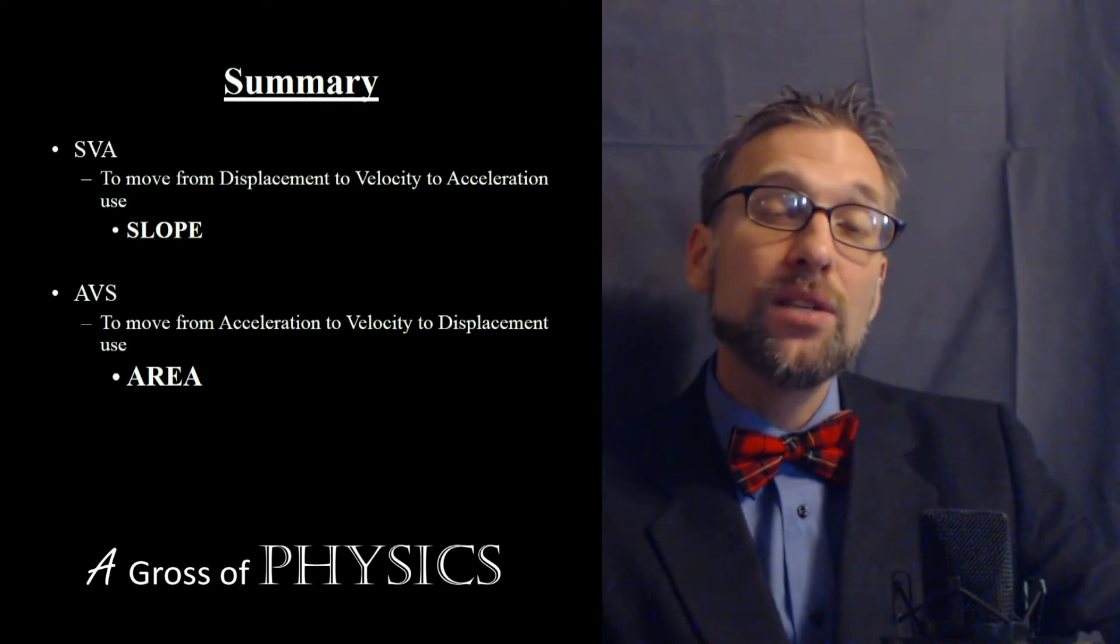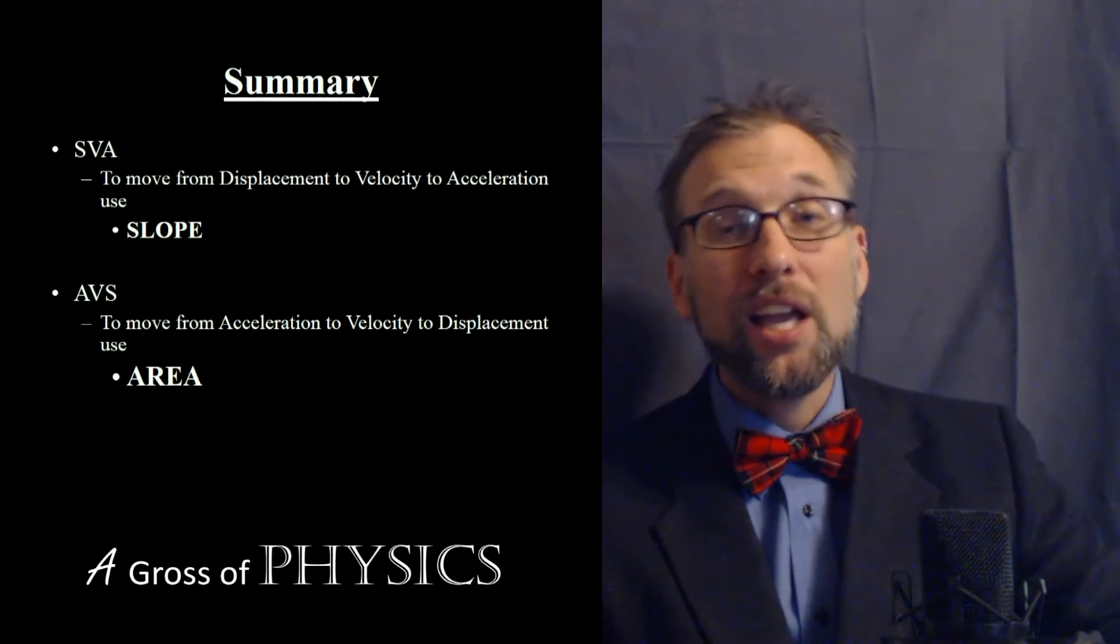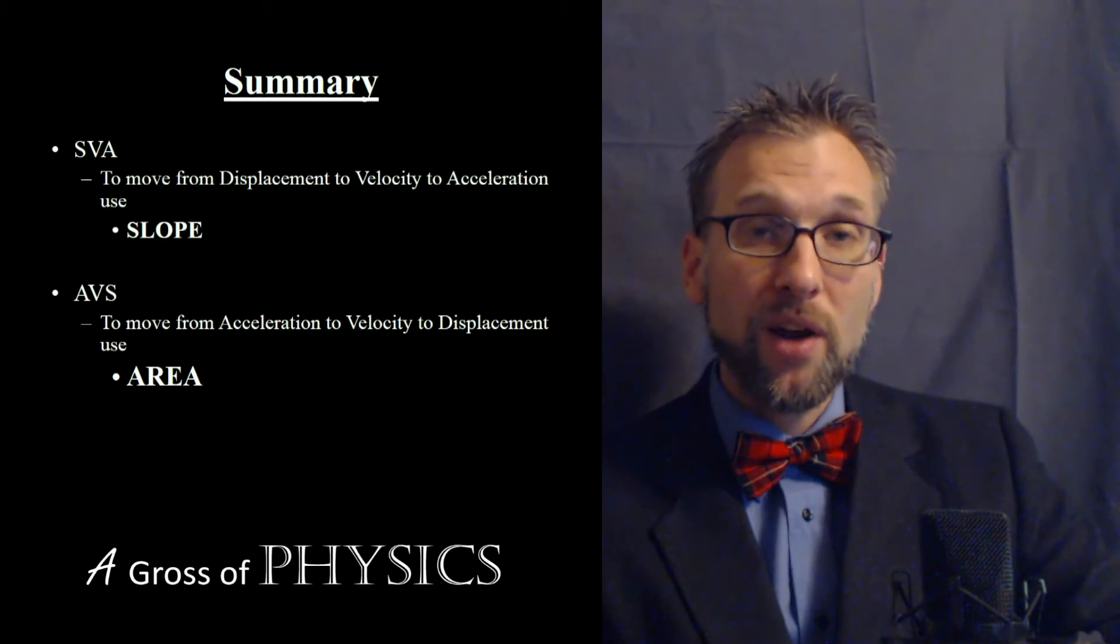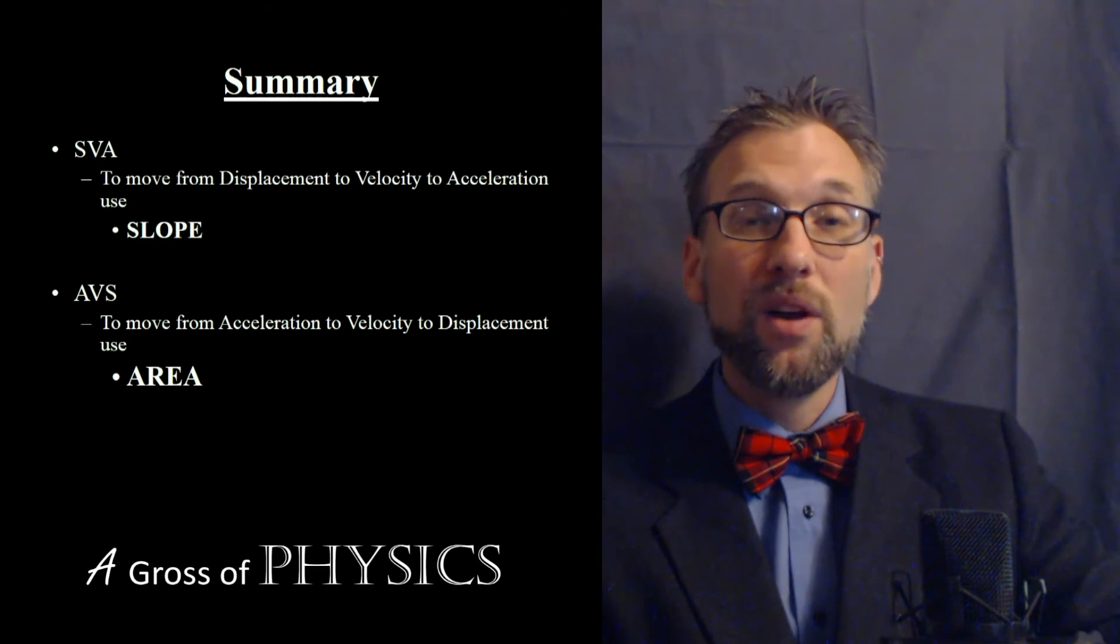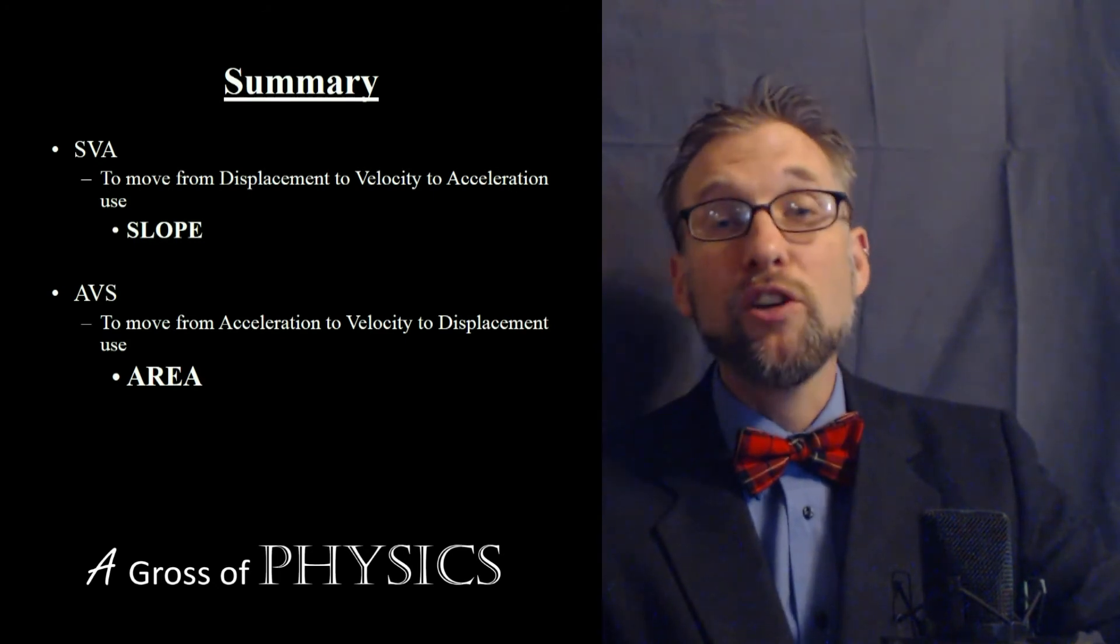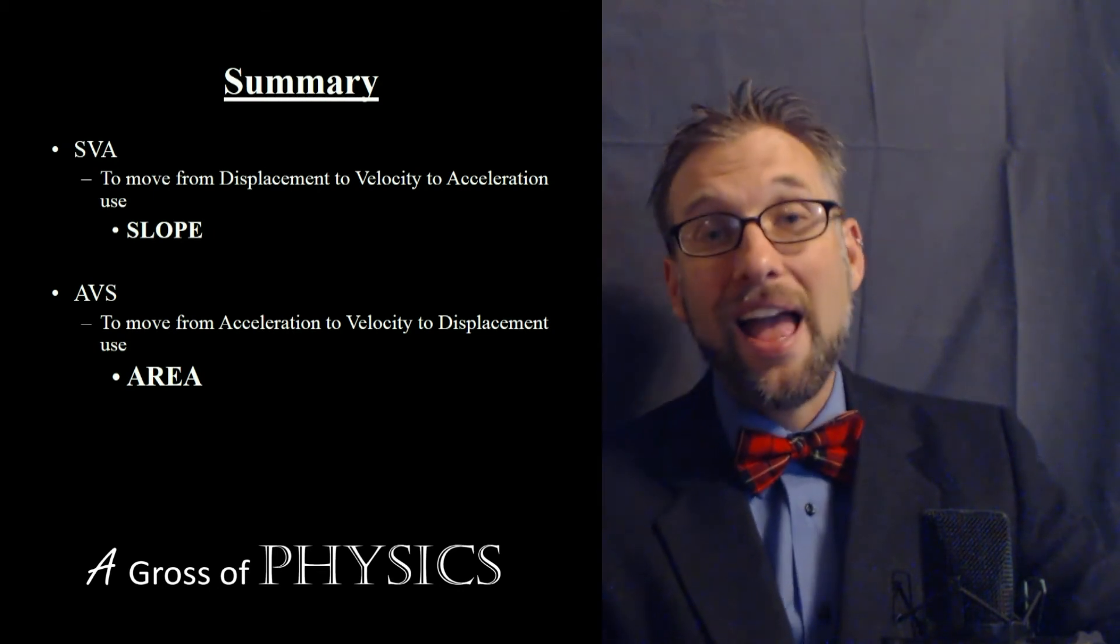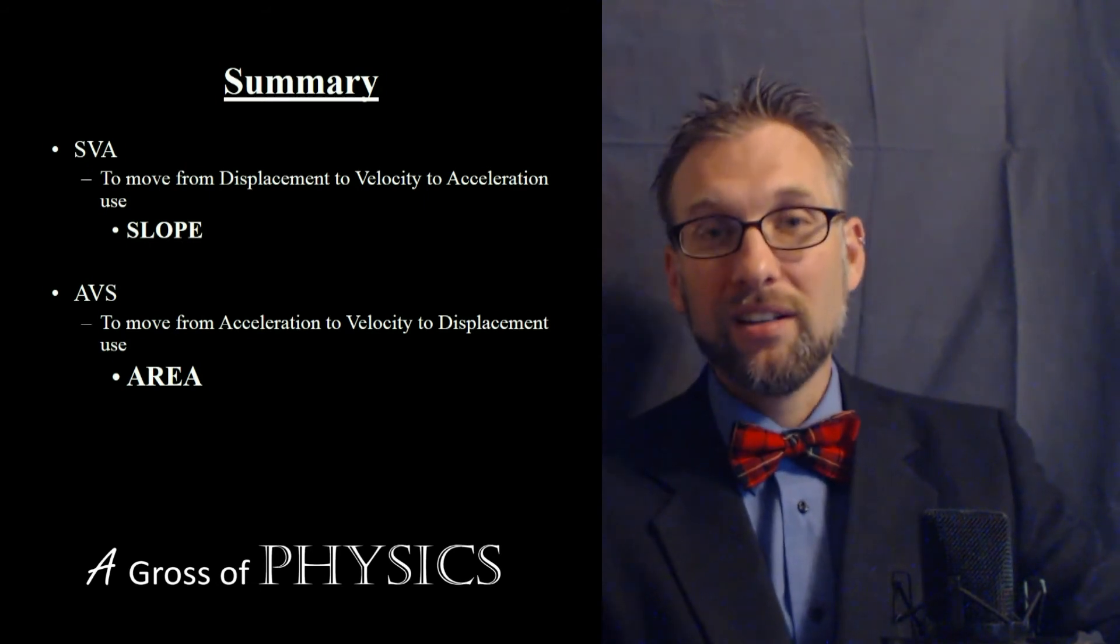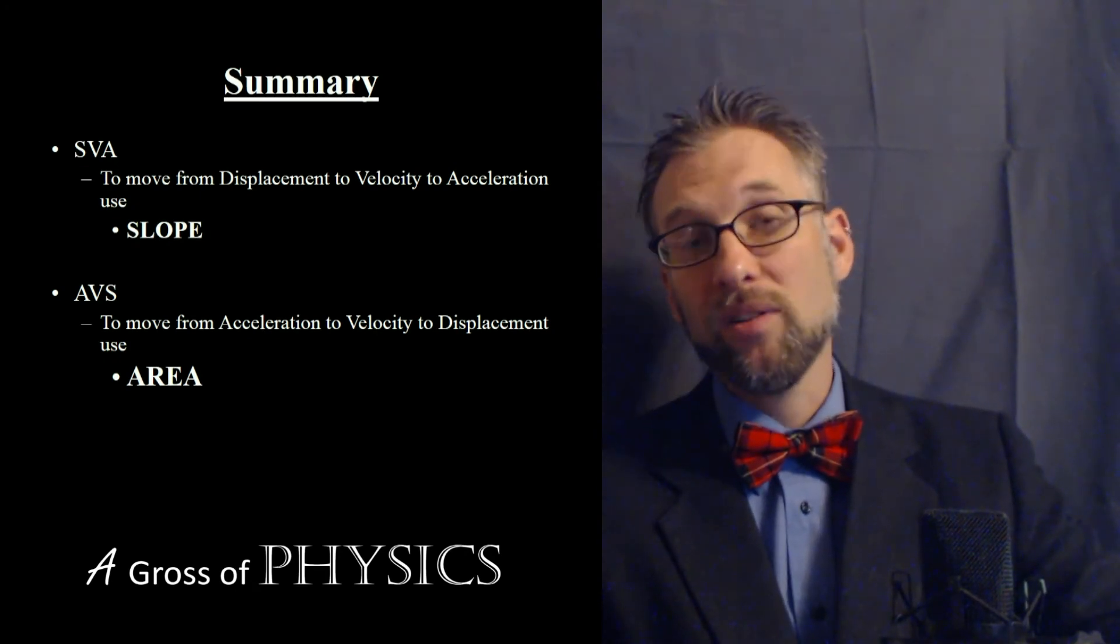So, if you use S for displacement, you can remember this mnemonic, SVA, AVS, in order to determine whether or not to use the slope or the area. If you have a displacement graph and you want to find the velocity, use the slope, SVA. If you have the velocity and you want to find the acceleration, slope, you're moving down the graph. If you go back up the graph, you're going from A to V to D or S, AVS. It just doesn't sound as right going DVA, AVD. So if you use S for displacement, you can remember SVA, AVS, to make your life easier.